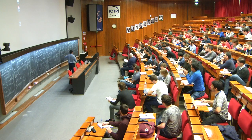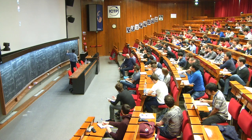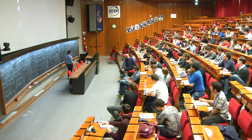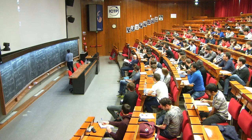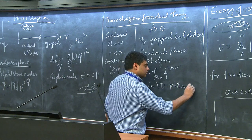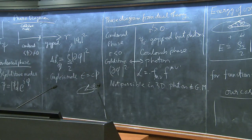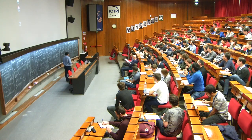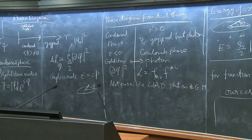A Goldstone mode in two plus one dimensions can be represented as a photon, and vice versa. They're both gapless, but you cannot do this in three dimensions — photons have two polarizations in three dimensions, so this kind of duality doesn't work there. It's a very special feature of two dimensions. That's one phase confirmed for our dual theory.